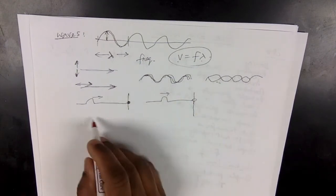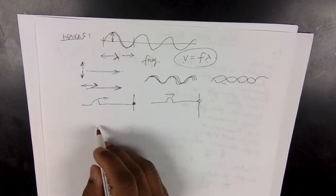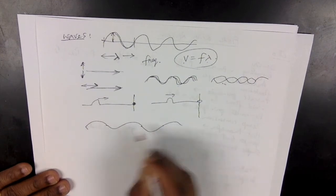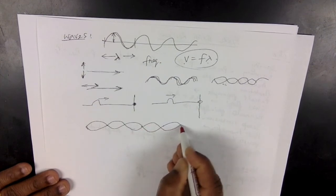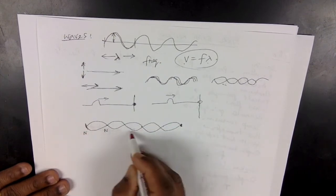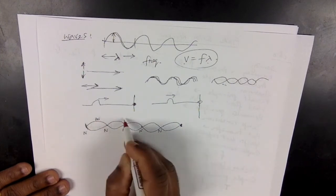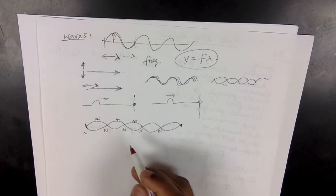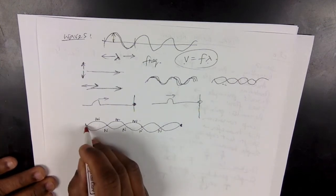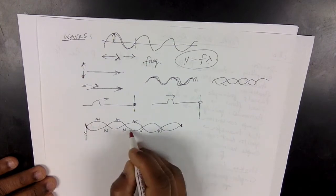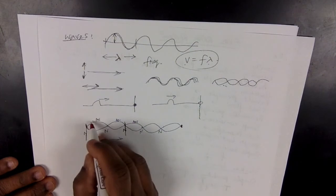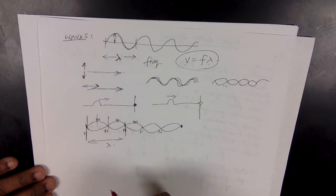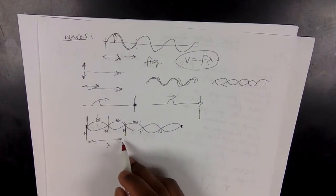When two identical waves go in opposite directions, they can set up a standing wave. A standing wave is a wave that appears not to be moving at all. There are points called nodes, which are not moving, and points called antinodes. You can see these on pages 389–390. The distance from node to node is one wavelength, from node to node midpoint is half a wavelength, and from a node to an antinode is a quarter wavelength.